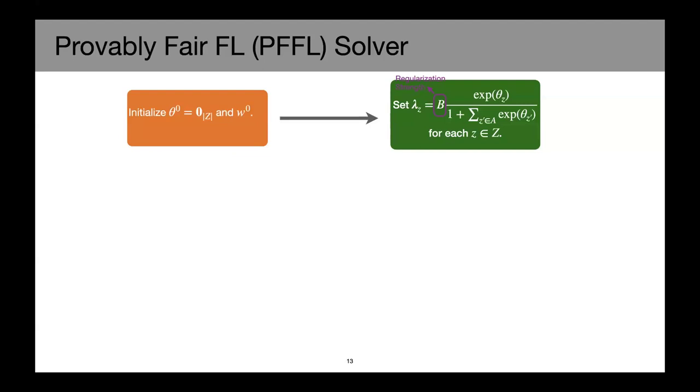And based on our objective, we propose a scalable solver, we call it PFFL. We first initialize the dual variable and the model parameter. So here, this B, capital B, is the regularization strength and we are later seeing the theoretical analysis on how this B could affect the fairness and convergence.